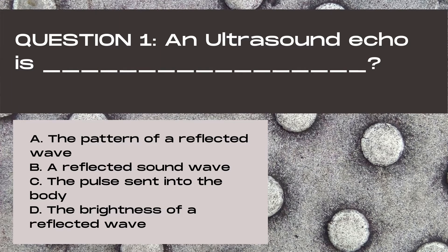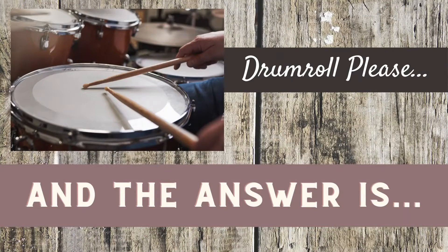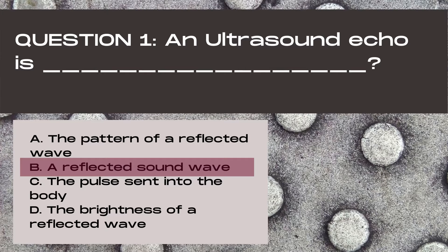Question 1. An ultrasound echo is: A. The pattern of a reflected wave, B. A reflected sound wave, C. The pulse sent into the body, or D. Brightness of a reflected wave. And the answer is B. A reflected sound wave.